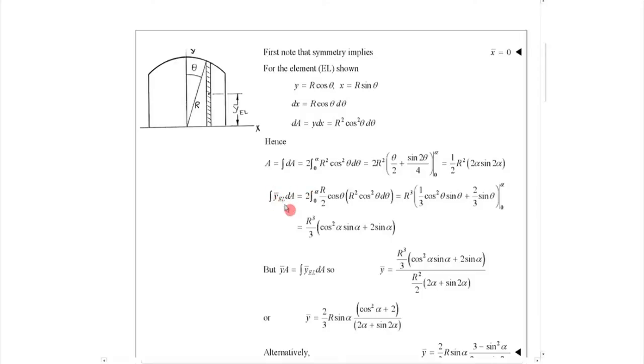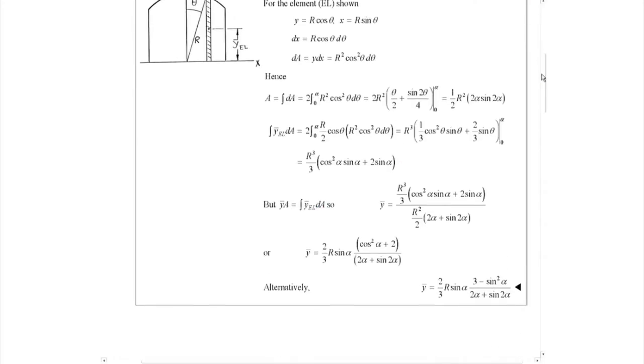Now I have the first moment about the x axis. First moment about the x axis is nothing but this y element has to be calculated, that is nothing but r cosine theta divided by 2. The centroid is r cosine theta divided by 2, you have the da. Finally we get the first moment as this and then we just say y bar a equals to this first moment we are equating.